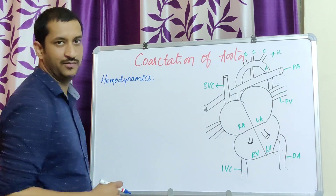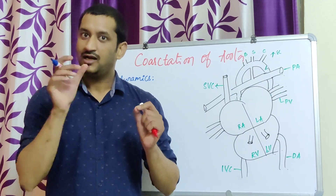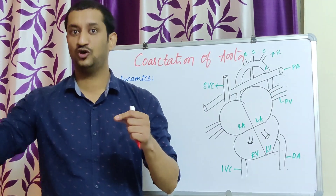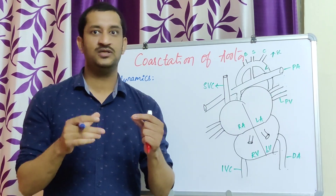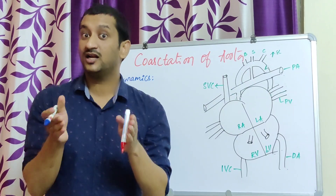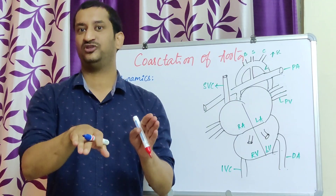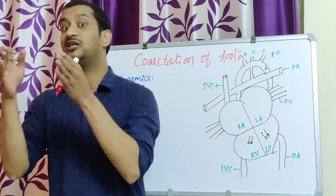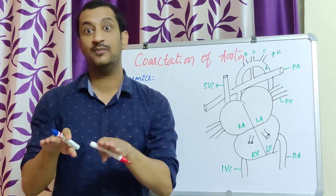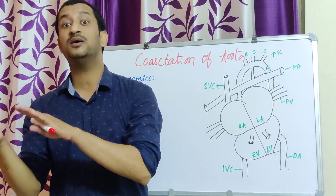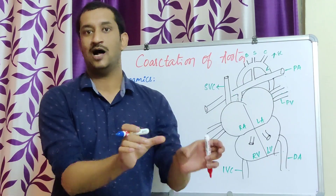Next, let's talk about hemodynamics. A student asked me: what is hemodynamics? Every disease condition has a pathophysiology — that means how does the physiology alter? But in congenital heart diseases particularly, the blood flow changes — that is the pathophysiology. So instead of using the term pathophysiology, we use the term hemodynamics. Hemo is related to blood; dynamics is related to changing the blood flow pattern. So hemodynamics is nothing but what is the normal blood flow pattern and what is the abnormal blood flow pattern.